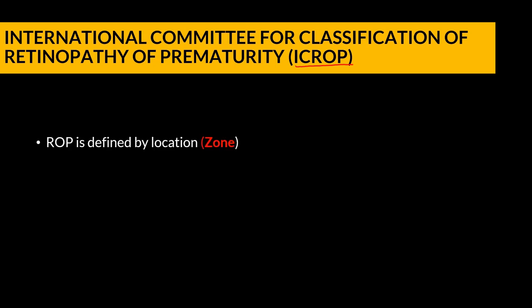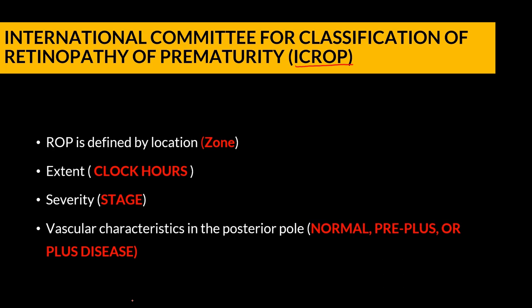The International Committee for Classification of Retinopathy of Prematurity, abbreviated as ICROP, described ROP based upon the location — called the zones in the retina — the extent (number of clock hours), the disease effects, and the severity called the staging. Based on vascular characteristics in the posterior pole, ROP was further divided into normal, pre-plus, or plus disease.